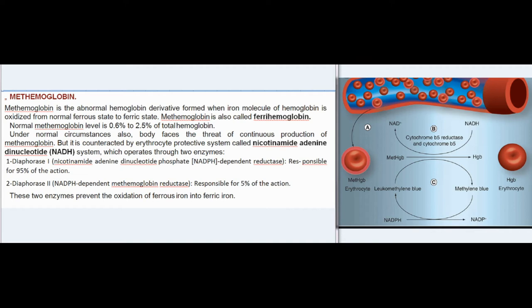When Hb saturation increases above 50%, death occurs. Methemoglobin is the abnormal hemoglobin derivative formed when the iron molecule of hemoglobin is oxidized from the normal ferrous state to the ferric state. Methemoglobin is also called ferrahemoglobin. Normal methemoglobin level is 0.6% to 2.5% of total hemoglobin. Under normal circumstances the body faces the threat of continuous production of methemoglobin.